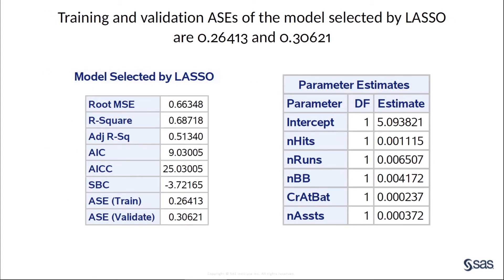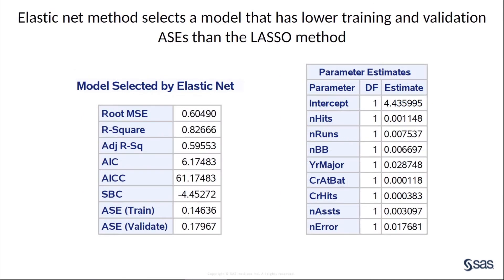This is the best model selected by the lasso method. You can see there are six variables in the model, including the intercept. The training ASE is 0.2641 and the validation ASE is 0.3062. Here are the results from elastic net selection. Both the training and validation ASE from the elastic net method are less than those from the lasso method, implying that in this case the elastic net method selects a better model than the lasso method.